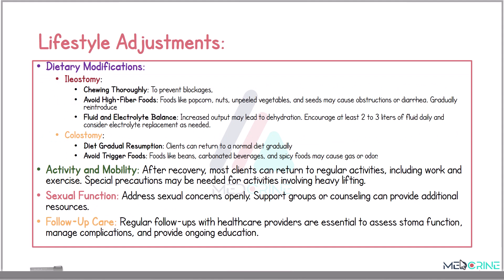There are lifestyle adjustments patients with stomas need to implement. Dietary modifications include advising ileostomy patients to chew food thoroughly to prevent blockages, and to avoid high-fiber foods such as popcorn, nuts, peeled vegetables, and seeds, which may cause obstructions and diarrhea. For fluid and electrolyte balance, increased output may lead to dehydration, so patients are encouraged to take at least 2 to 3 liters of fluid daily and consider electrolyte replacement when needed. For colostomy patients, diet resumption and avoiding trigger foods such as beans, carbonated beverages, and spicy foods can reduce gas and odor.